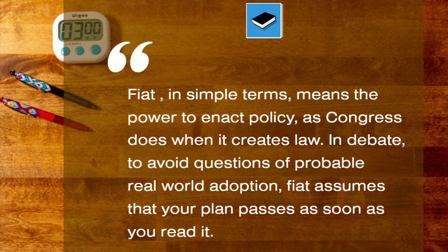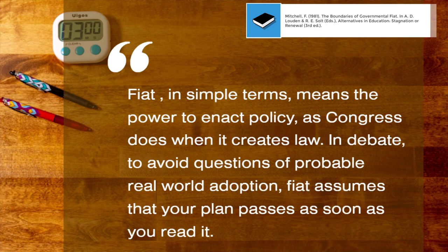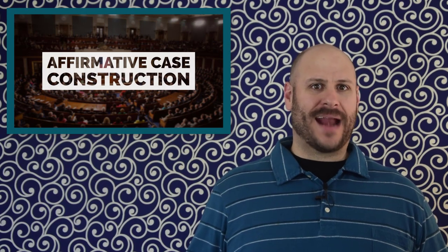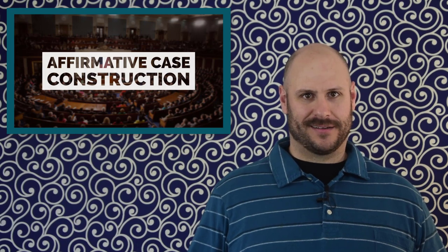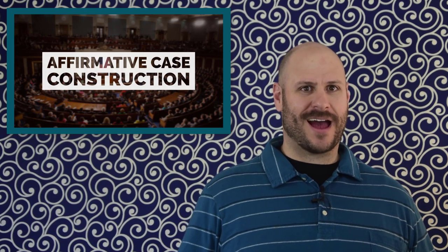The second important thing to understand about plans is that they are implemented through the power of fiat. Fiat, in simple terms, means the power to enact policy as Congress does when it creates law. In debate, to avoid questions of probable real-world adoption, fiat assumes that your plan passes as soon as you read it. This allows us to argue about whether an advocacy is good or bad, not whether it is likely to be implemented. If an opponent argues that Congress would not pass your plan, simply remind them that you have the power to fiat your plan and move on.